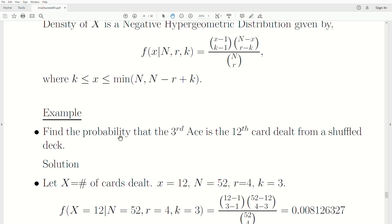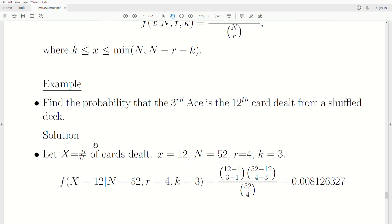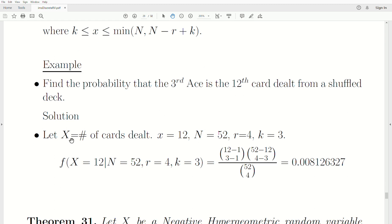Let's look at an example. Find the probability that the third ace is dealt on the 12th card from a shuffled deck. To me, from the very start, that is so cool that we can even calculate that so easily.